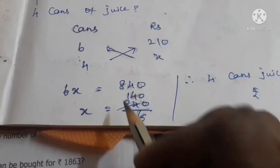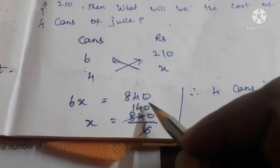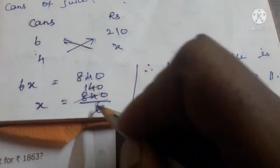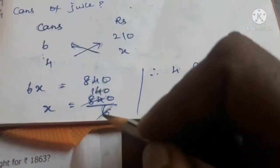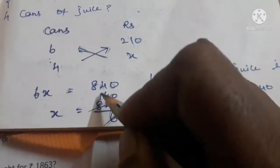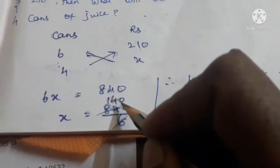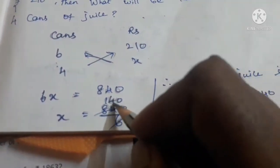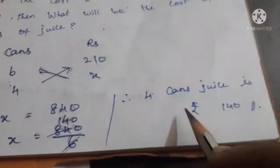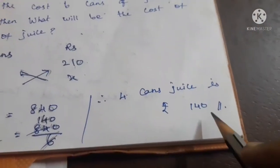6 ones are 6. 6 into 140 = 840. So, simplifying: 8 divided by 6 gives remainder 2; bring down to get 24; 6 into 24 = 4. So x = 140. Therefore, 4 cans of juice cost Rs.140.